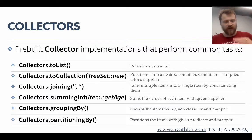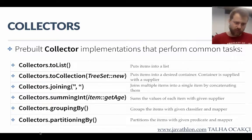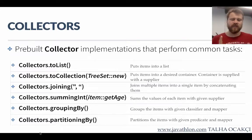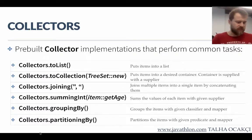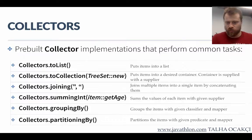The other function is groupingBy(). groupingBy() is used for grouping items according to a given function, and then you may put them into a list with Collectors.toList(), etc. partitioningBy() partitions the data according to a predicate — not a function but a predicate — because it groups items based on whether they conform to the predicate or not. groupingBy() is different; you may group all employees according to their departments or salary intervals.